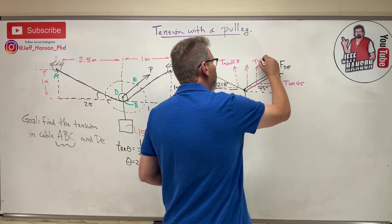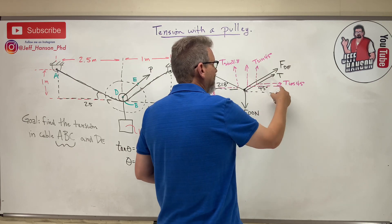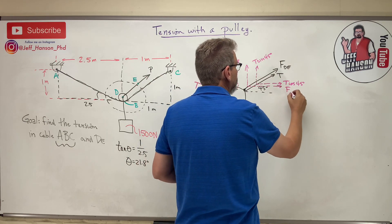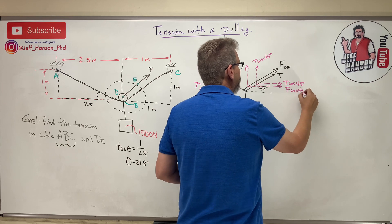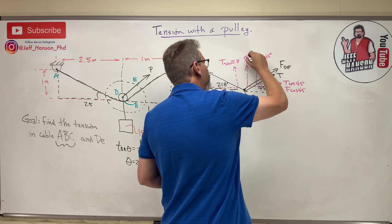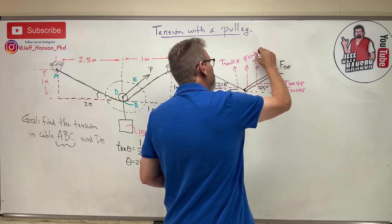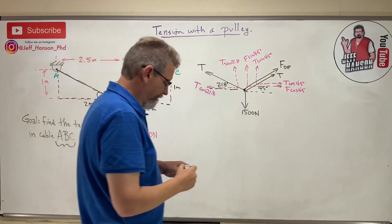And the F cable is going to be F cos 45 and F sin 45. So now that I've got those labeled, man, how easy is this gonna be now?